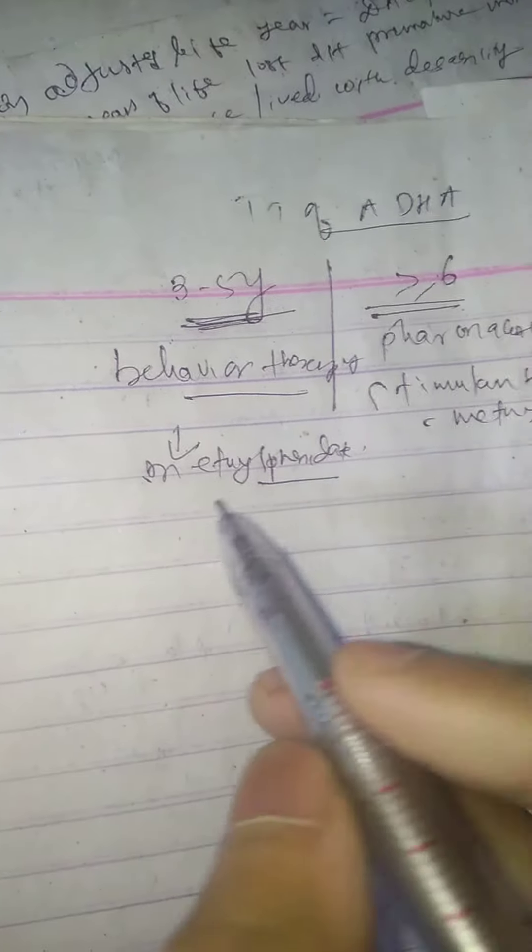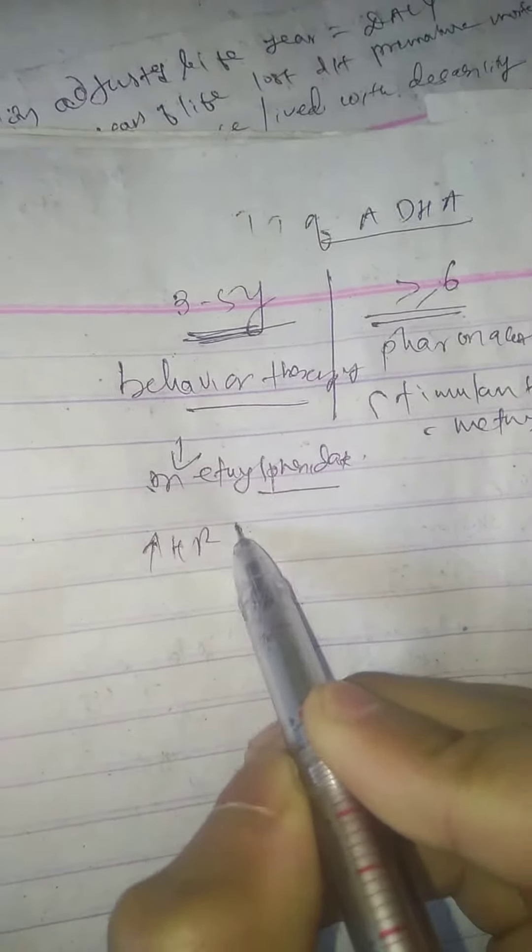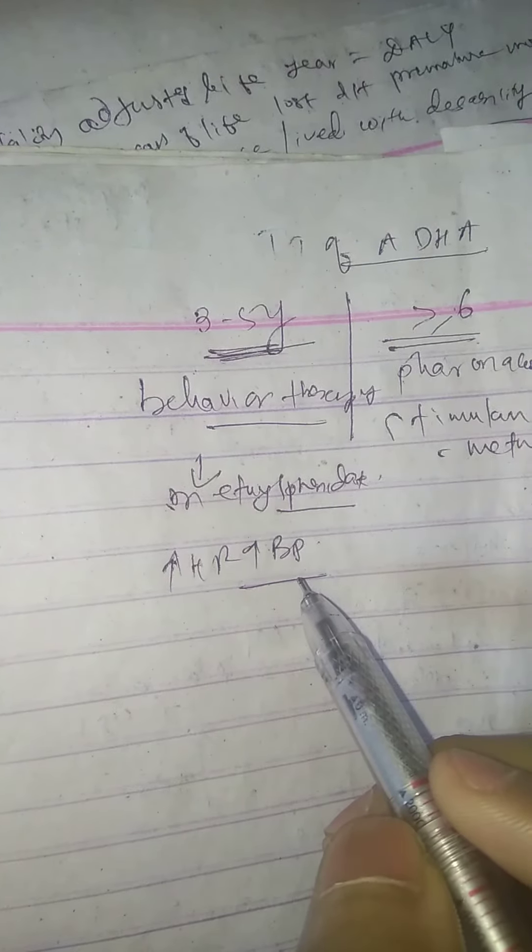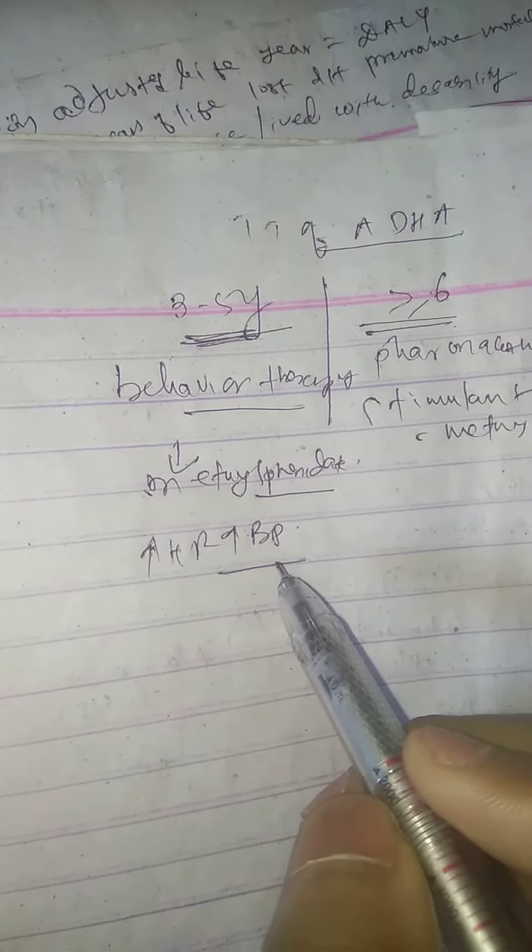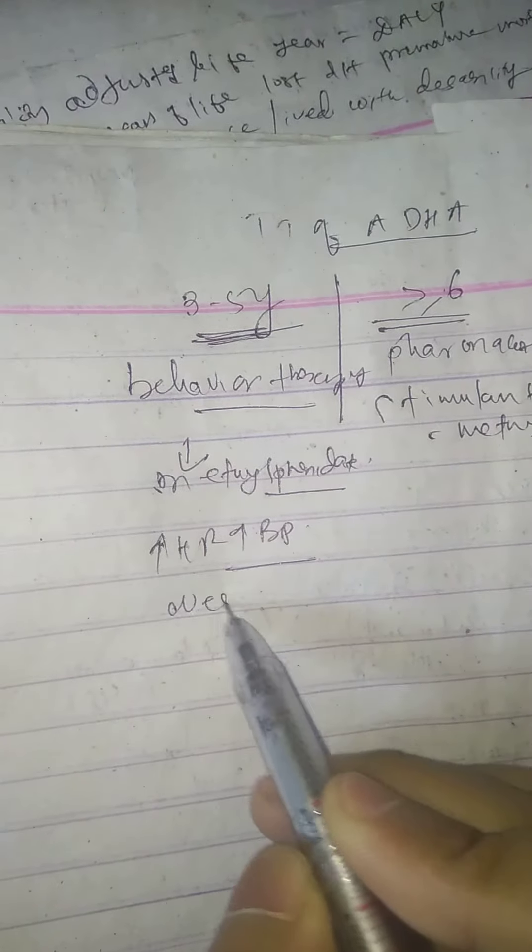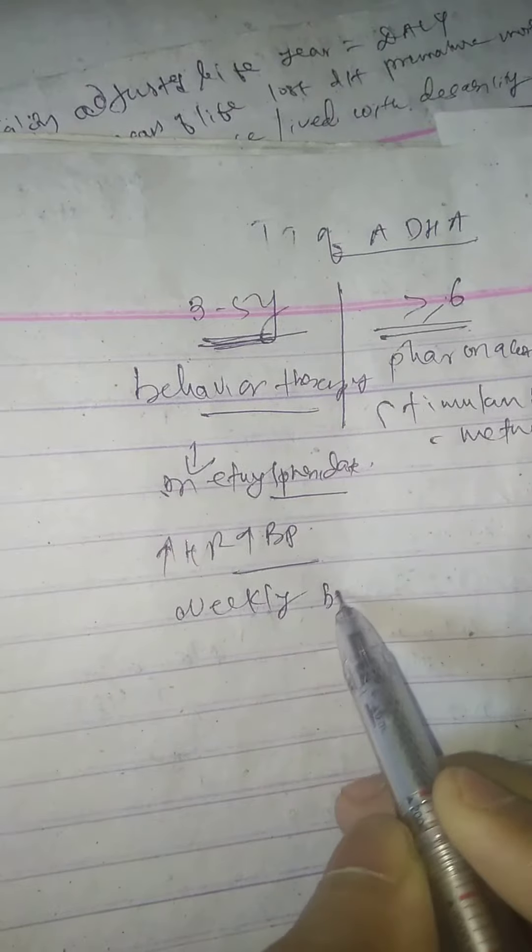Stimulants may cause mild elevation in heart rate and blood pressure, so these should be monitored in patients treated with stimulants. Stimulant doses are typically titrated up on a weekly basis